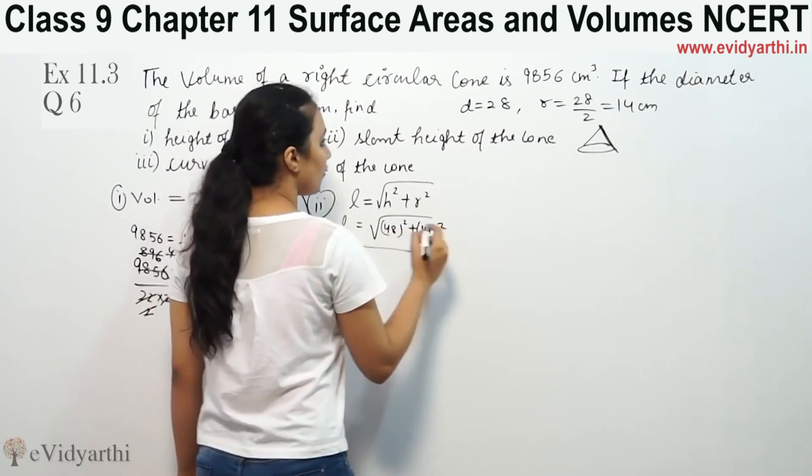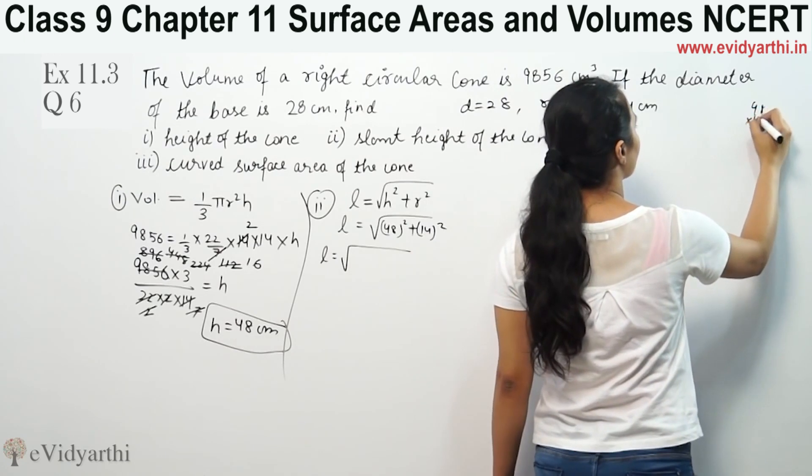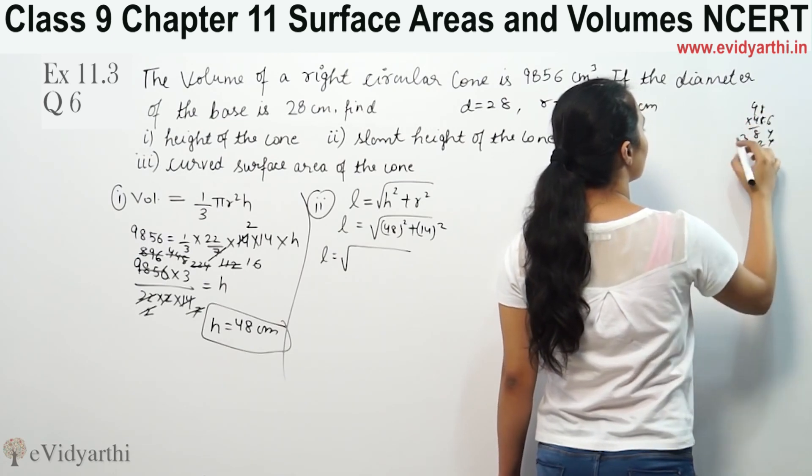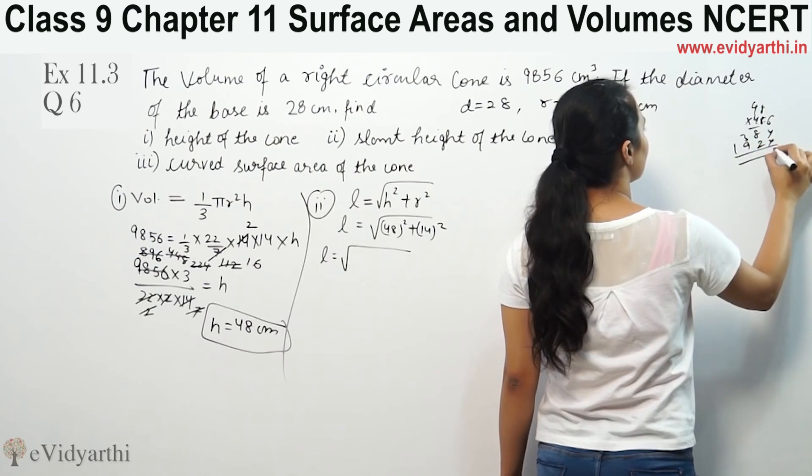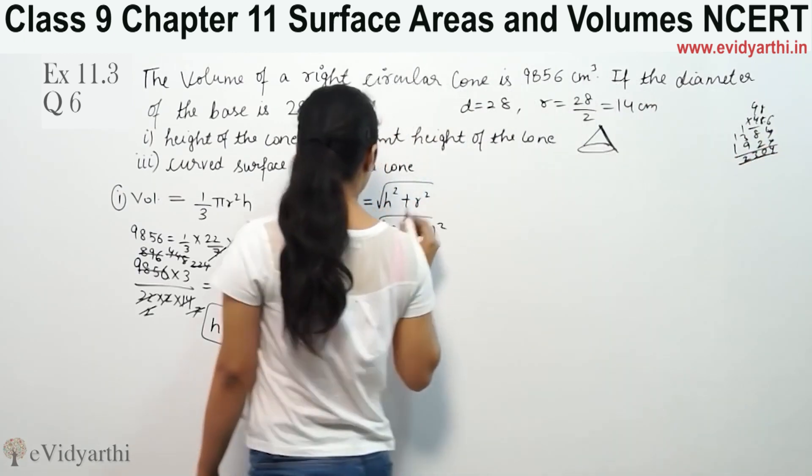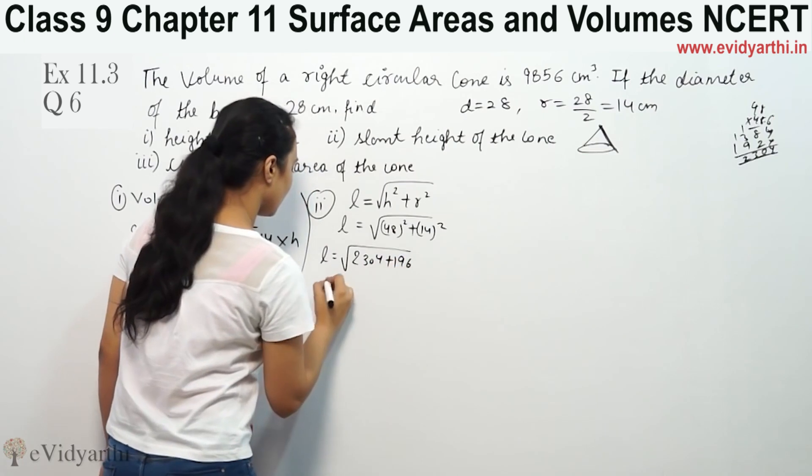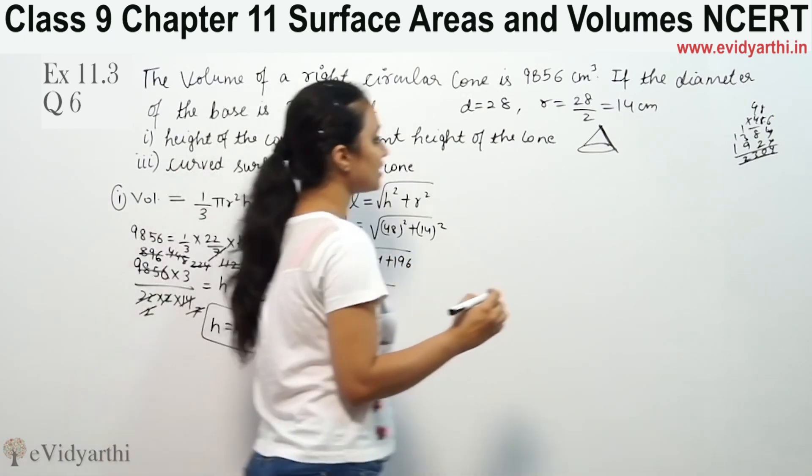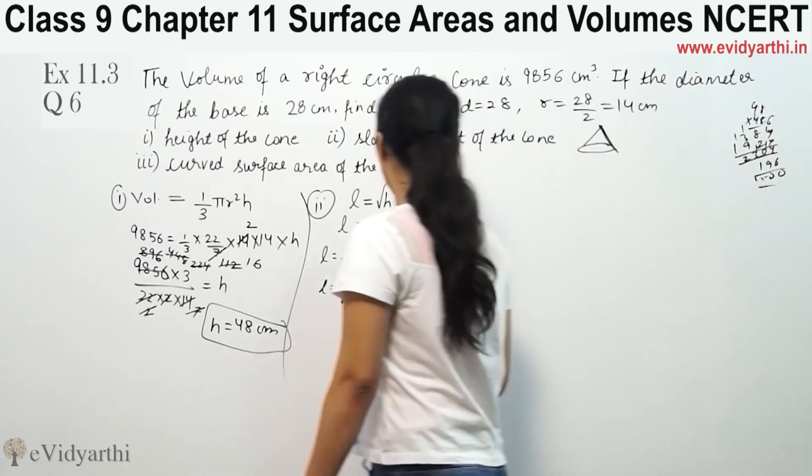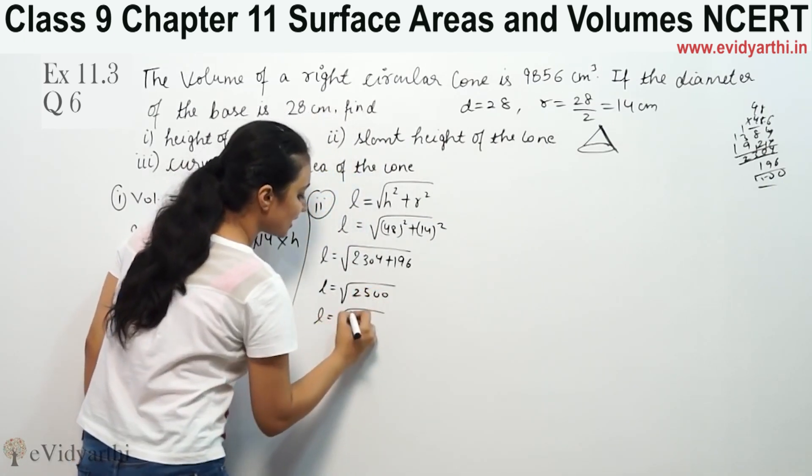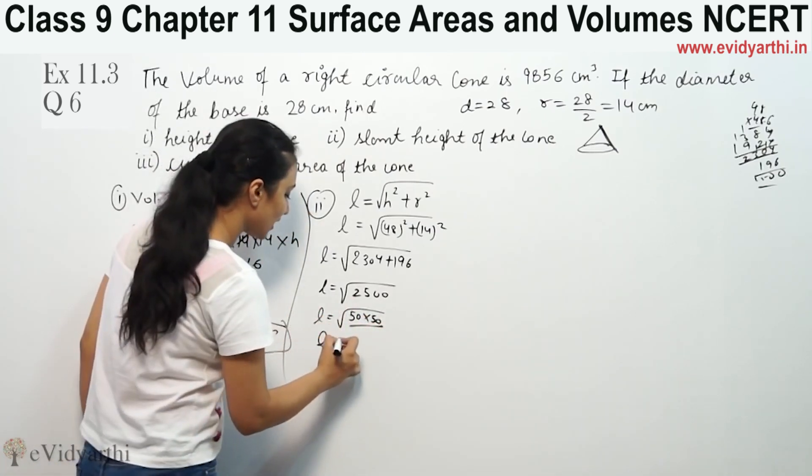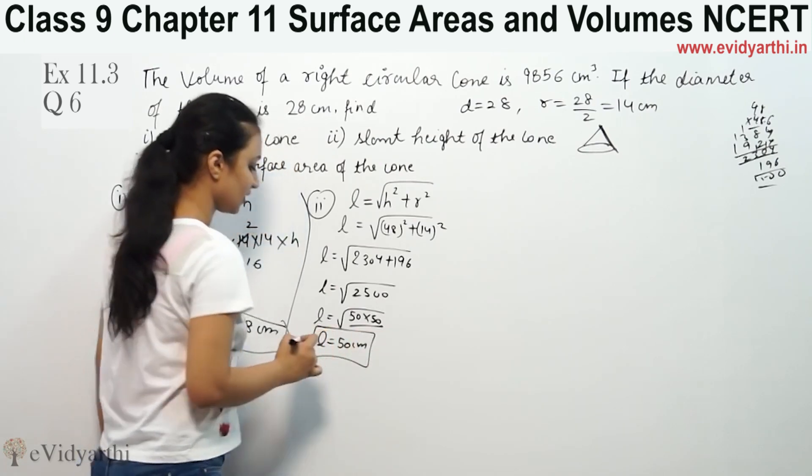So h is 48 squared plus radius is 14 squared. L will be equal to 48 squared, 64 times 2 equals 38 times 4 is 32, giving 2304. Plus 196. So L will be equal to 2304 plus 196, this is 2500. 2500 square root is 50 times 50. That means L is 50 cm. This is the slant height.